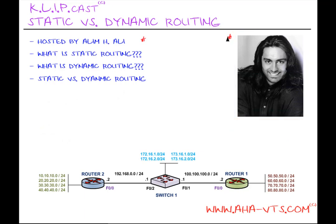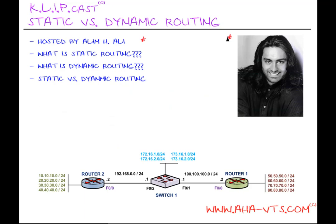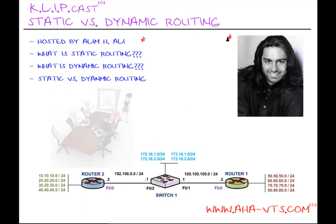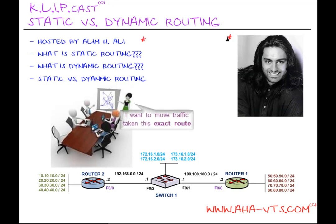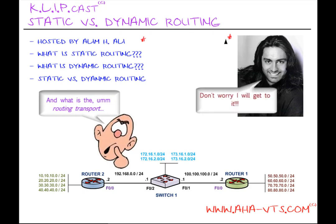As network professionals throughout our daily activities, we take a look at packets or information that traverses across our network from point A to point B. And if we have a new build-up, say to another building, we have to make choices on how we want to route that information. Also, if we have designated traffic that we want to move across our network via a specific path of our choosing, how do we do that? And more importantly, what is the underlying transport that makes this happen?